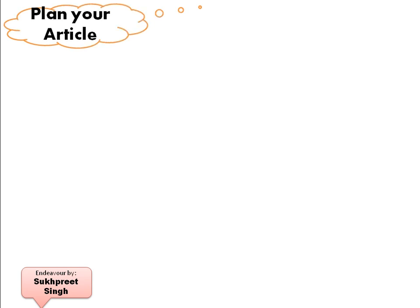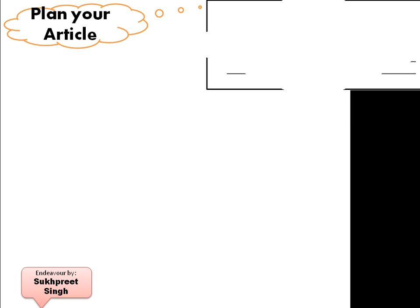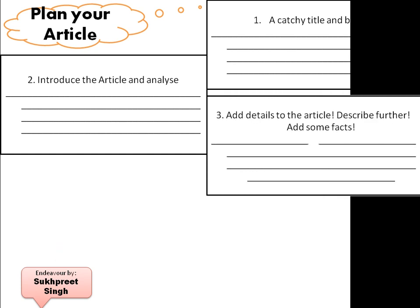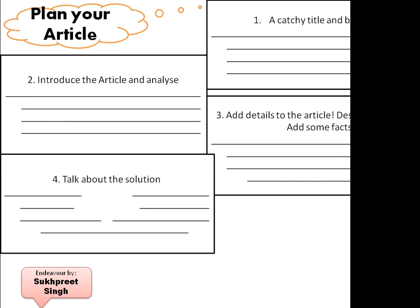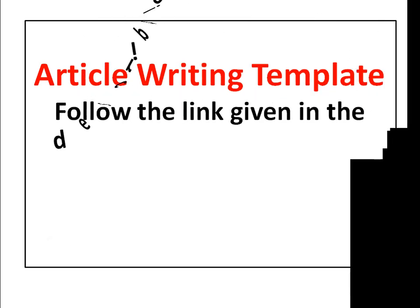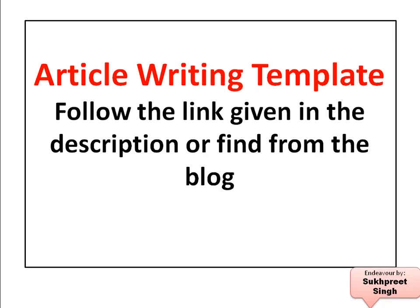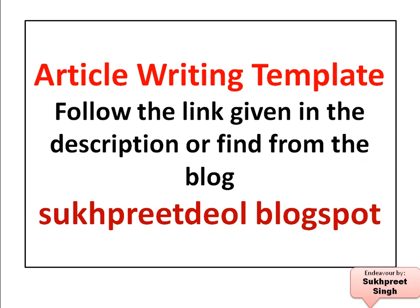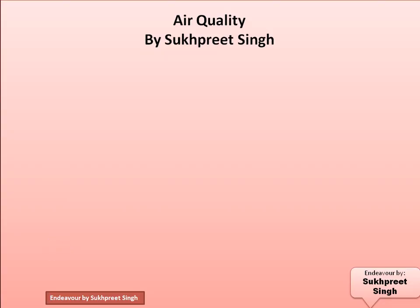Now let's plan your article. This template is also available on my blog at sukhpreetdeol.blogspot.com. The template consists of: first, a catchy title and a byline; then introduce the article; analyze and add details; describe further; add some facts; talk about the solution; and in the end give a conclusion. This is how an article is to be written — these are the parts your article should have. Follow the link in the description for the full article writing template.